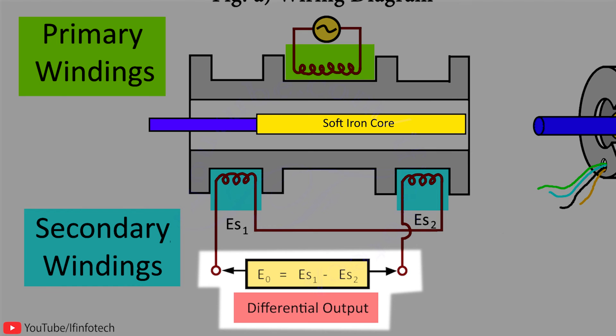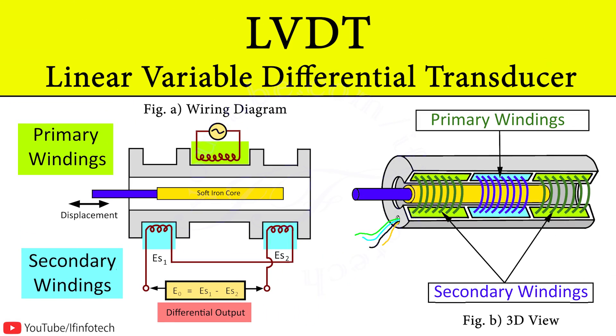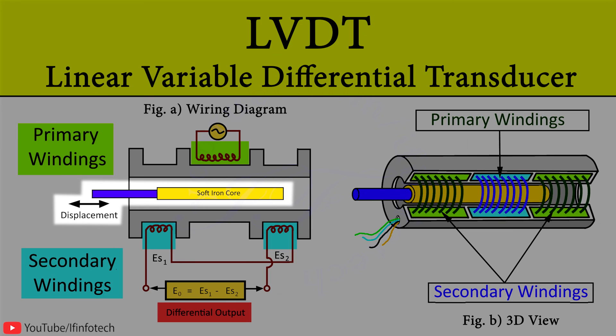Thus, differential output measured between two secondary terminals of LVDT is directly proportional to displacement of the magnetic core. In this way, we can measure displacement of the iron core by linear variable differential transducer.